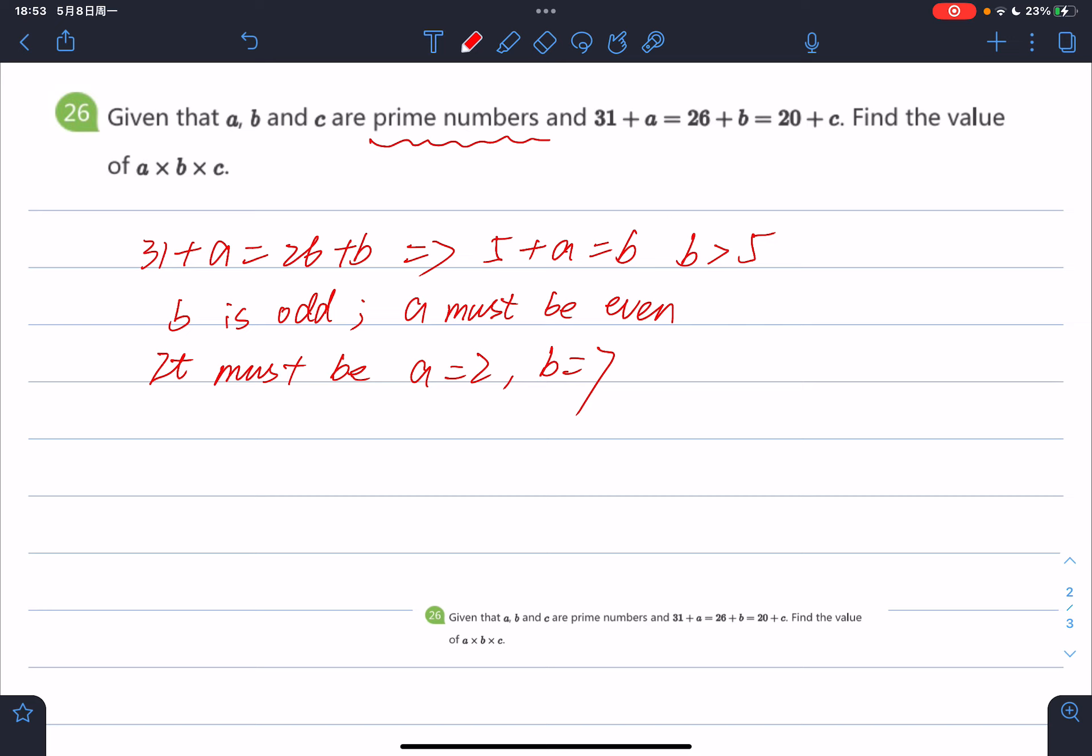So, based on these conditions—that a and b are prime—we can deduce that b is odd and a must be even, and then we may find out the values of a and b.